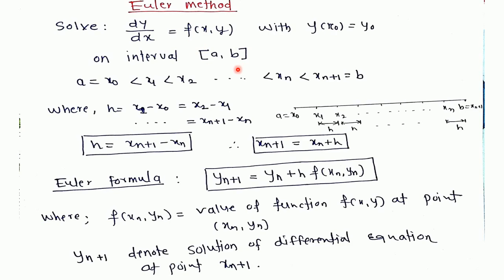For this purpose we divide the interval into a number of sub-intervals by the points x₀, x₁, x₂, and so on. As shown in the figure, the distance between consecutive points x₀ and x₁, x₁ and x₂, and so on is uniform, equal to h, which we call the step size. The points x₀, x₁, x₂, and so on are called mesh points or grid points. In general, the step size h = x_{n+1} − xₙ, which implies x_{n+1} = xₙ + h.